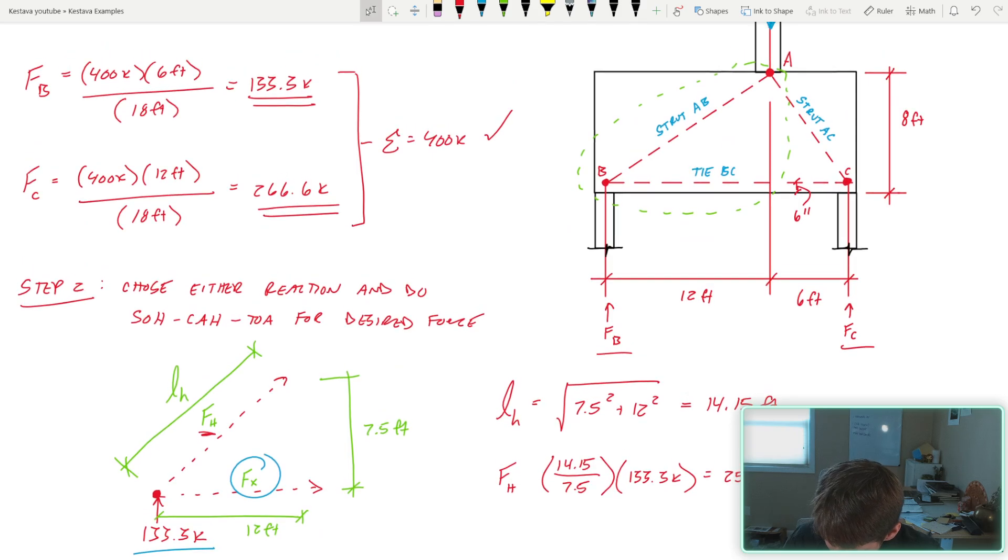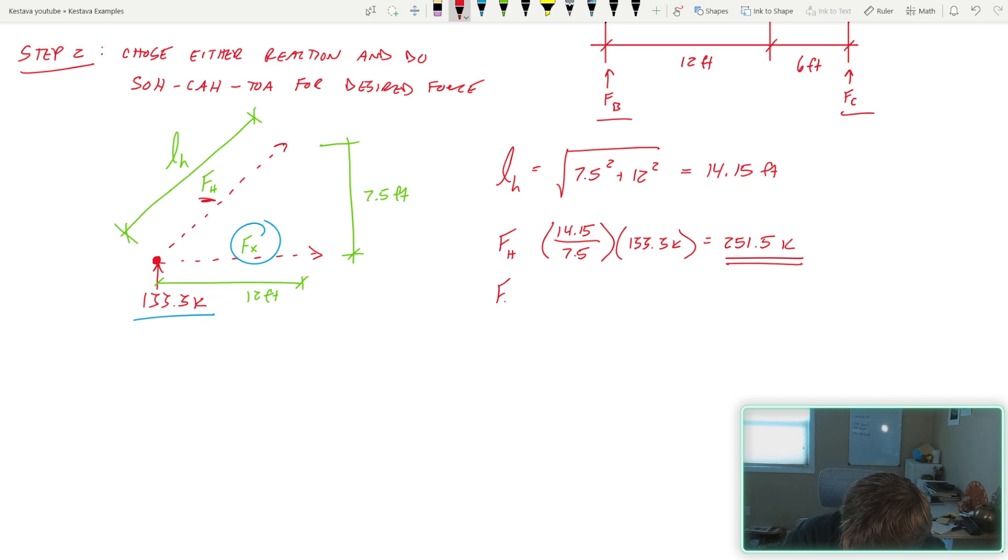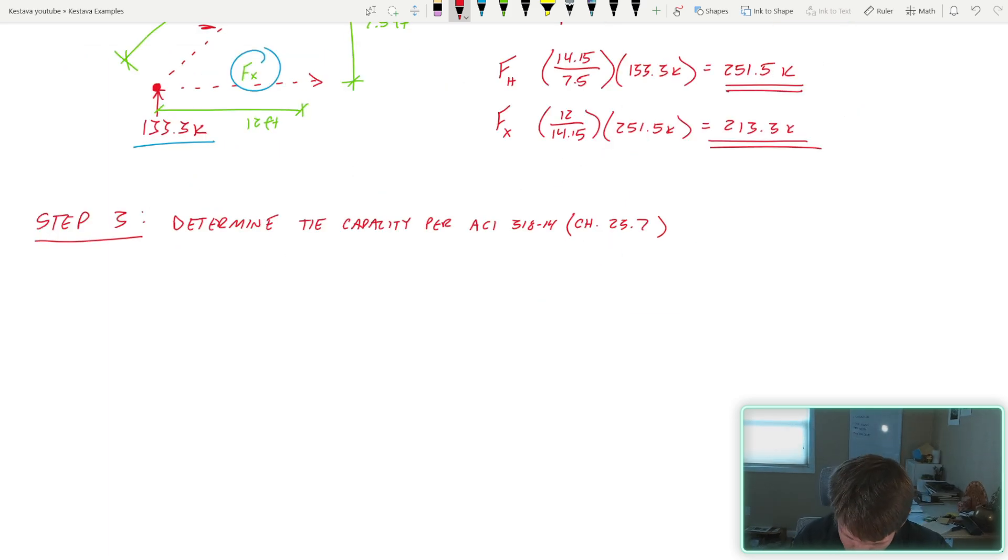Then I plugged in to find what I'm calling F sub H, which is our hypotenuse force. That's simply 14.15 over 7.5. So that's using the lengths to magnify the force, which gets you 251.5 kips. So that F sub H ends up being your strut AB force that you then would design your strut AB for in compression. So that's a little side tangent here, but for us now we need to find F sub X, same thing that gets us 213.3 kips as our tie design force. So lovely there.